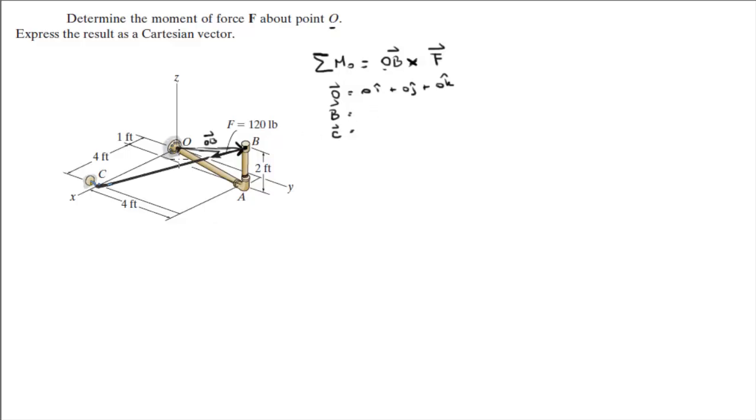B sits at 1i plus 4j plus 2k and C sits at 5i plus 0j plus 0k. So OB is B minus O. O is the origin, so this is equal to B and B is 1i plus 4j plus 2k.